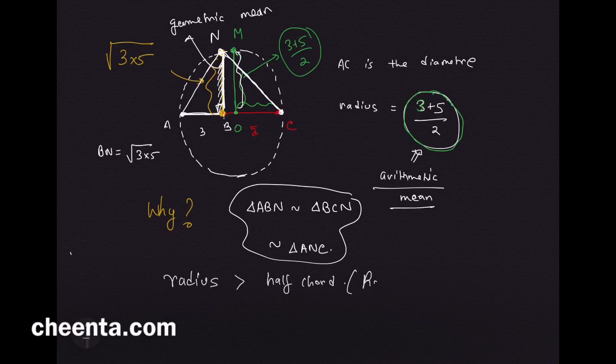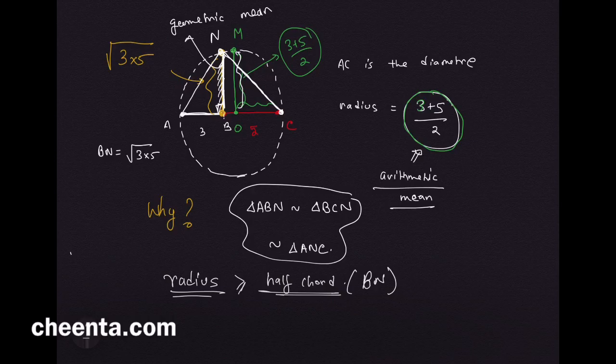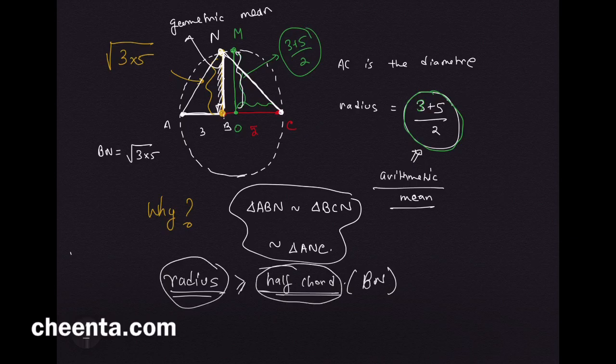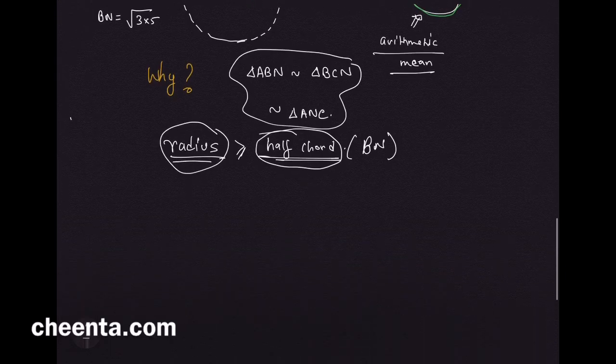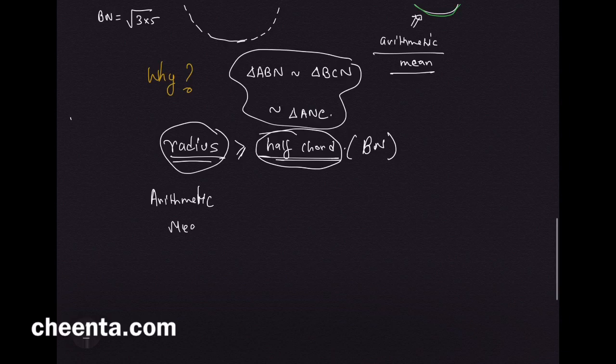BN is the half chord. A radius will be greater than or equal to any other half chord in this particular circle because the diameter is the largest chord inside the circle. So the fact that radius is greater than any other half chord translates to arithmetic mean being greater than or equal to the geometric mean.